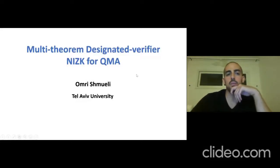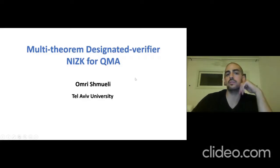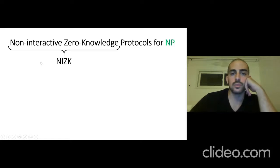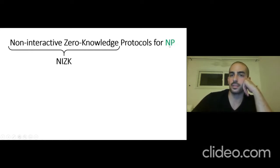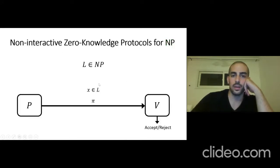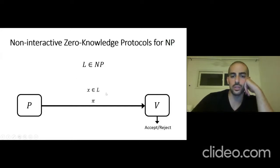Hi everyone. My name is Omri, and welcome to this crypto talk on multi-theorem designated verifier NIZK for QMA. Let's start by recalling what a NIZK, or non-interactive zero-knowledge protocol, is. First, let's talk about the classical analog of QMA, which is NP. We want a non-interactive proof for a statement in L, where L is some NP language. This is a long-known result.